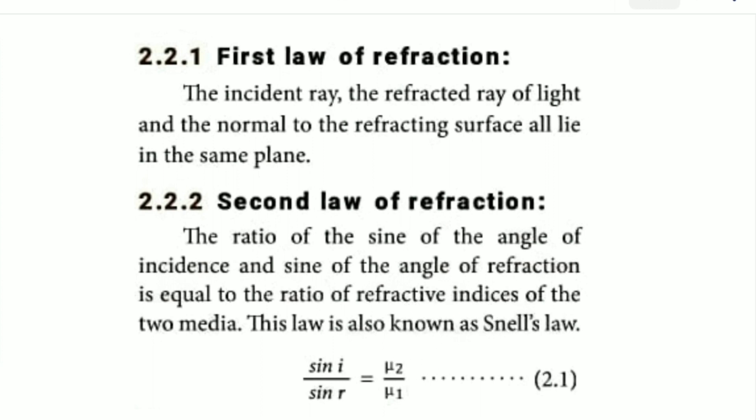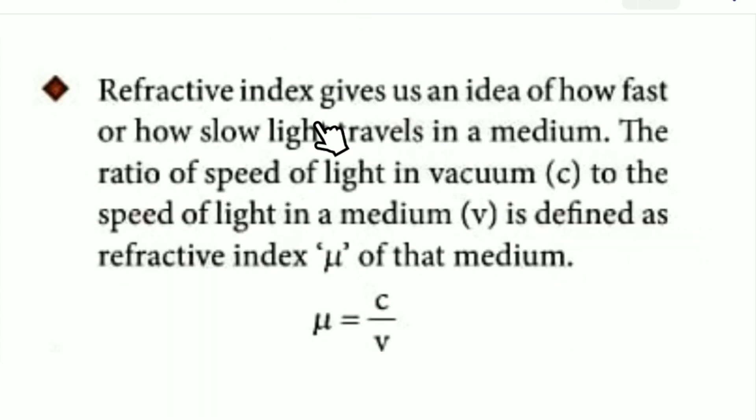The refractive index gives us an idea of how fast or how slow light travels in a medium. The ratio of speed of light in vacuum (c) to the speed of light in a medium (v) is defined as the refractive index μ of that medium.